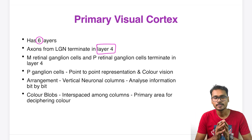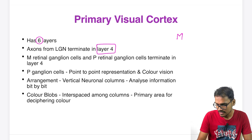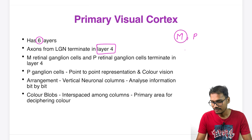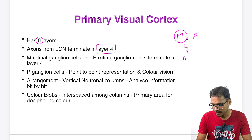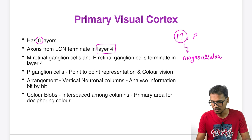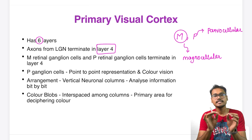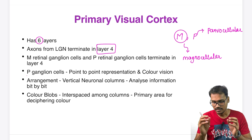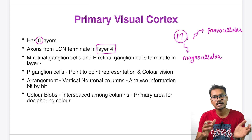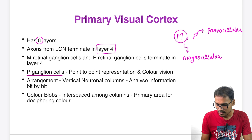Layer four is of great significance because the optic radiations coming from the lateral geniculate nucleus go and innervate layer four. In the retinal ganglion cells there are two groups: the M group, also called magnocellular cells, carried by the magnocellular pathway, and the P group, called parvocellular cells. Both pathways majorly go to layer four, but they have different properties.